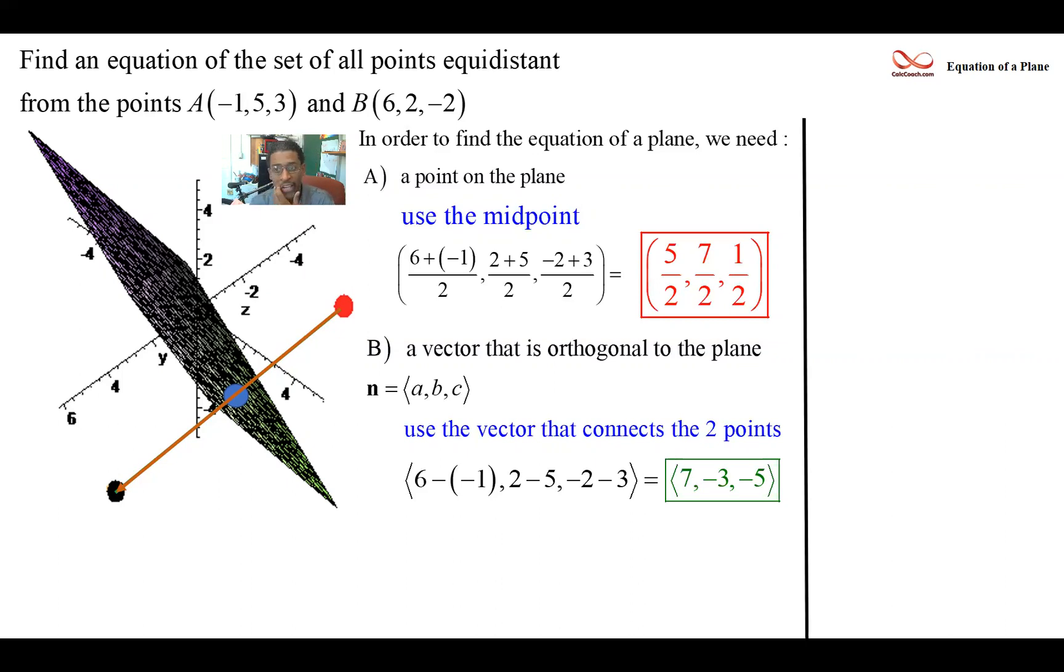Well, the generic equation for a plane has the format of AX plus BY plus CZ plus D equals zero. The A, B, and C come from the normal vector. They are the components of the normal vector.